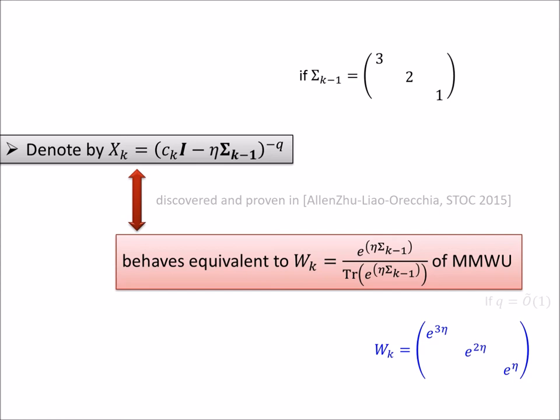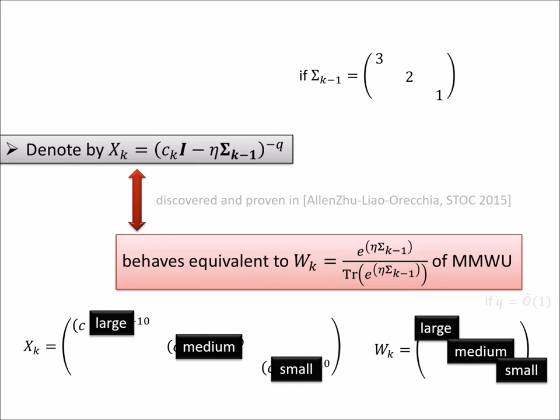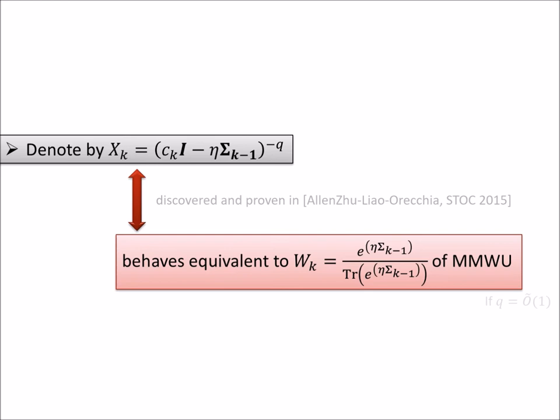Suppose the partial sum so far is a diagonal matrix like 3, 2, 1. Now, I claim that W_k up to the scaling factor is nothing but e^{3η}, e^{2η}, and e^η. In contrast, X_k, if you compute it, is like (c_k - 3η)^{-10}, (c_k - 2η)^{-10}, and (c_k - η)^{-10}. Without thinking too much about math, you can quickly realize that the first diagonal is large in both cases, the second diagonal is medium, and the third diagonal is small in both cases. So it's really this large matched to large and small matched to small correspondence that makes sure this new matrix X_k behaves similarly to the original matrix W_k. Therefore, if instead of using W_k we use X_k, we can also get optimal regret.